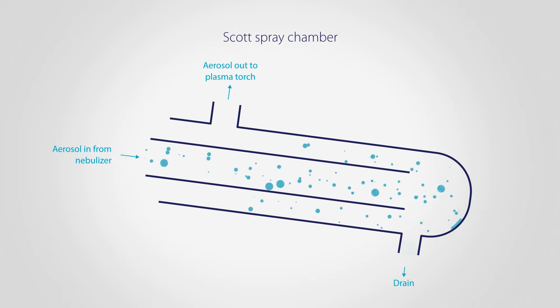Smaller droplets circulate in the argon gas flow and exit the chamber, supplying a constant stream of finely sized aerosol to the torch.